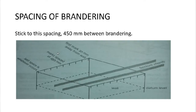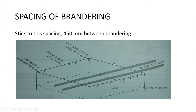There is a diagram showing the spacing when setting out. Marks are made on the opposite walls, and the bottom cords run across those marked lines. There is the datum level as the point of reference, then spacings of 450 millimeters to the next brandering.